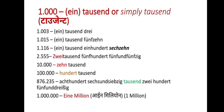1000 is 'ein tausend', or simply 'tausend'. 'Tausend drei' means 1003. 'Tausend fünfzehn' means 1015. '1900' is 'tausend neunhundert'. You should not forget to mention 'hundert' within the thousands when applicable.